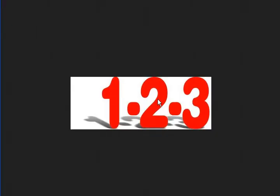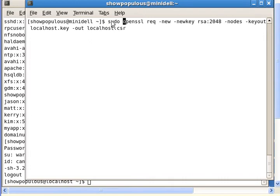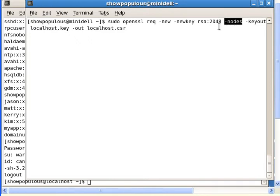Now we're finished with step one and we're going to step two: using TLS encryption. The first thing we do is go back to the server and ensure the server gets a certificate — an ID card — from a certificate authority, which is like a government agency. The server also needs a key to decrypt messages.